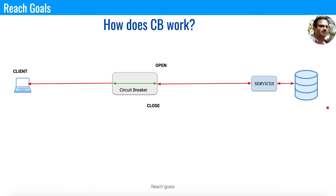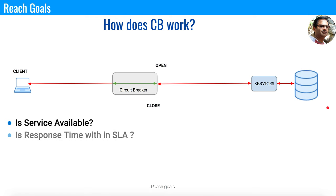So how does the circuit breaker work? You have a client, the client in turn connects to the circuit breaker, and the circuit breaker in turn connects to the services and the underlying database. The circuit breaker has a monitoring mechanism and it does two operations: it checks whether the service is available, and it checks whether the response time is higher than the SLA. In both cases, the circuit breaker opens and does not allow the services to be connected with the client.